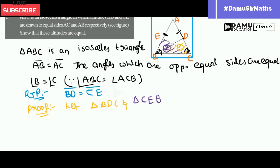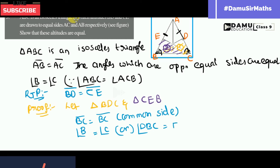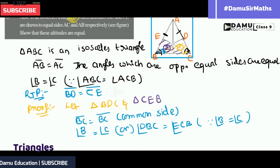So what are the common sides and what angles are equal? BC is common to both triangles, so BC equals BC — that is the common side. Then one angle is also common here: angle DBC is equal to angle ECB, since angle B equals angle C. So this angle from one triangle corresponds to the other angle in the second triangle.